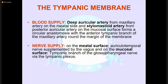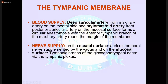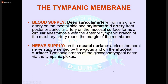The tympanic membrane is supplied by the deep auricular artery from the maxillary artery on the lateral surface, forming a circular anastomosis with the anterior branch of the maxillary artery around the margin of the membrane. Nerve supply on the medial surface is by the auricular temporal nerve.